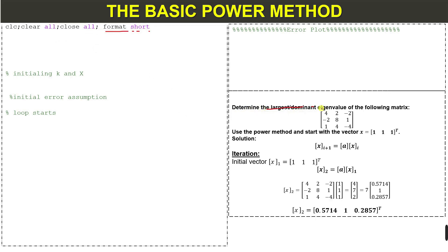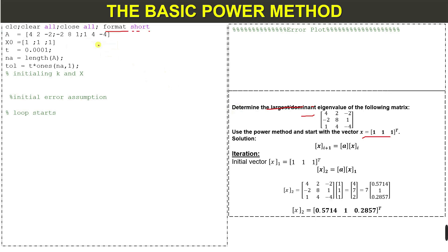For example, we have an example: determine the largest or dominant eigenvalue of the matrix. This is the given matrix and this is our starting vector or initial vector. We write the given data — this is the matrix A, a 3x3 square matrix — and this is our initial vector x-naught, which we write like this. We can take any non-zero vector.